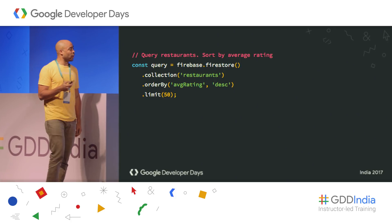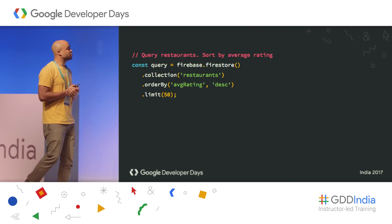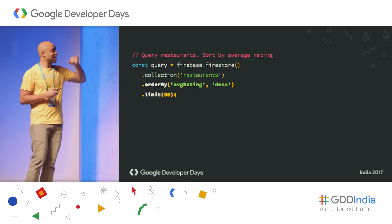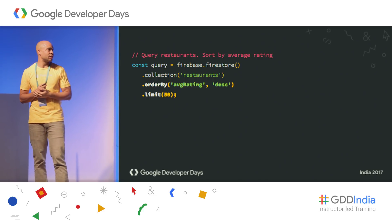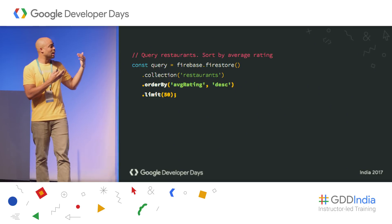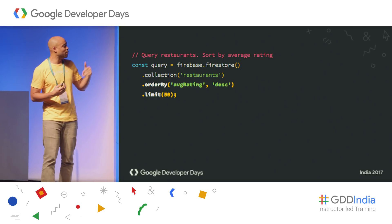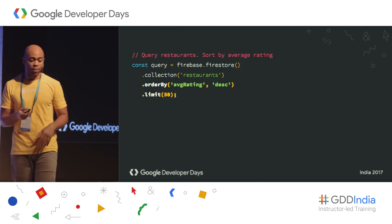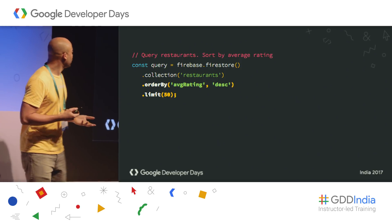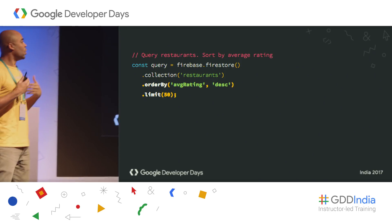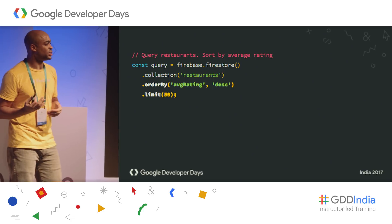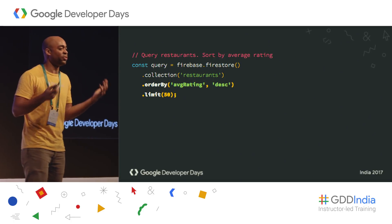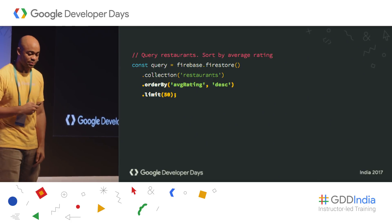To query some restaurants, we get the same restaurants collection and add additional things like orderBy or limit. In this case, we're querying all of the restaurants in descending order of average rating to get the top 50 restaurants.